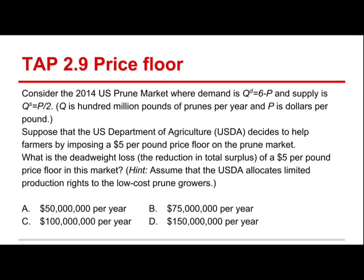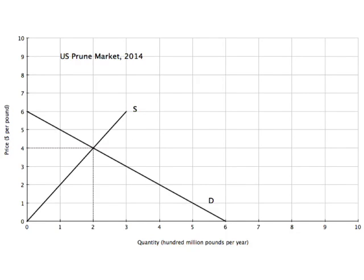I went back and made a base case graph — that would have been handy to have in class. Here we go. We've got a price floor at $5 a bushel. Notice that at $5 a bushel, there are lots of farmers that would like to supply prunes — that's 250 million pounds. But that's the quantity farmers would like to supply; only 100 million pounds are demanded at that price.